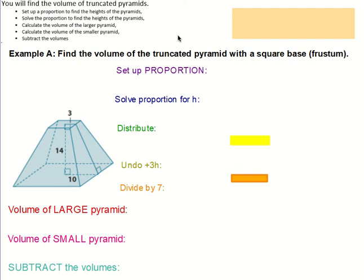Example A: find the volume of the truncated pyramid with a square base, a frustum.